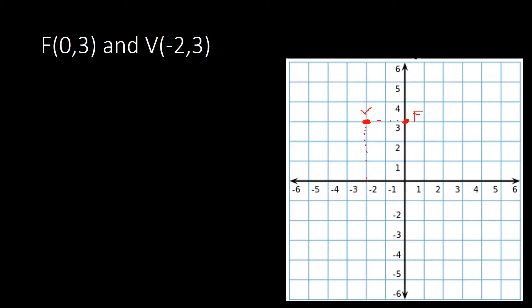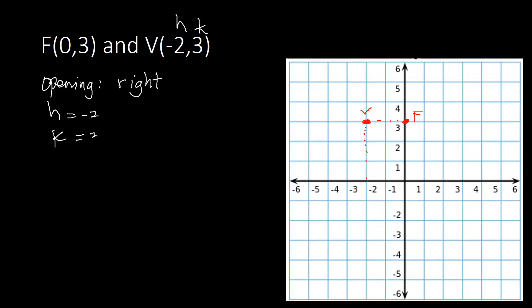From there we can determine the orientation of the parabola. Since the focus is on the right side of the vertex, the parabola is opening to the right. For the vertex, our h is negative 2 and our k is 3.